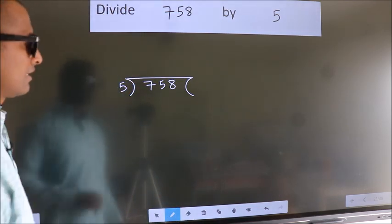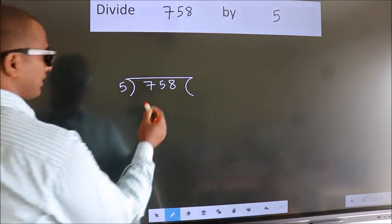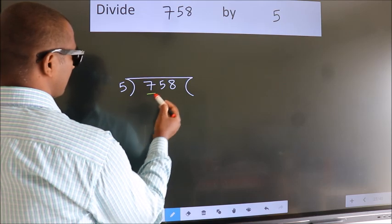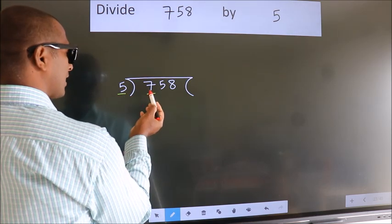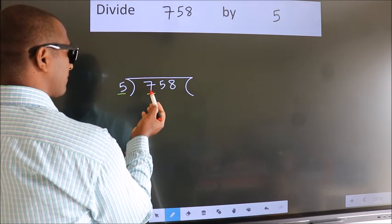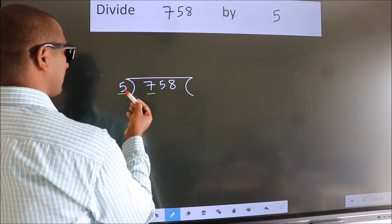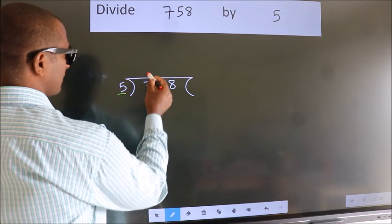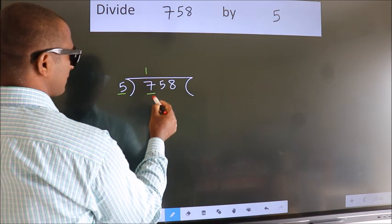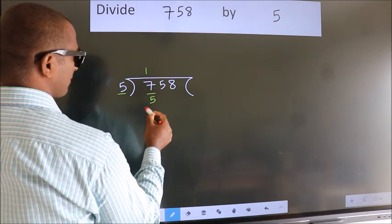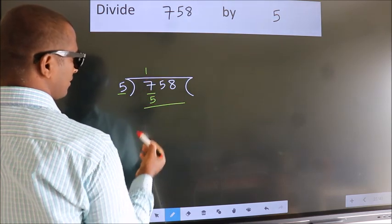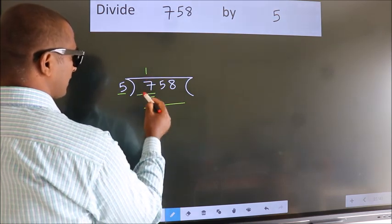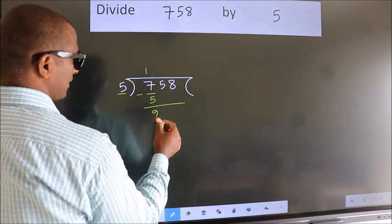Next, here we have 7, here 5. A number close to 7 in the 5 table is 5 once, which is 5. Now we should subtract. We get 2.